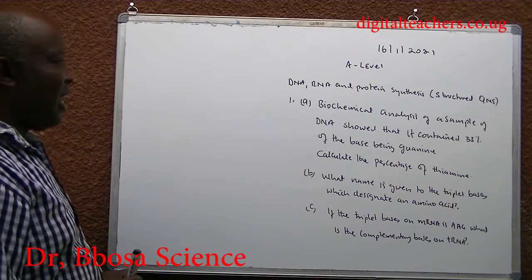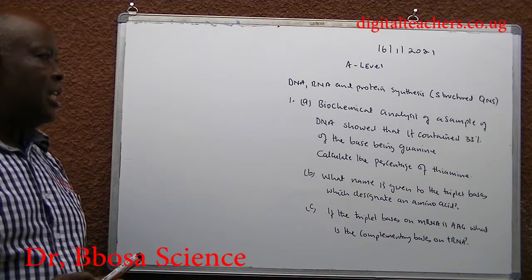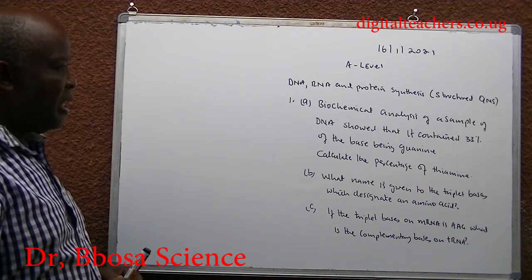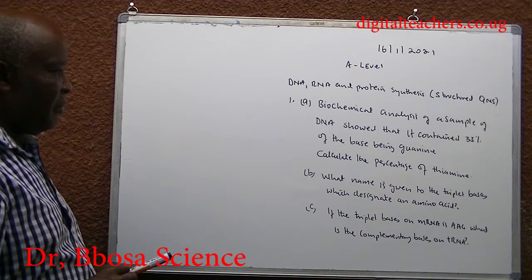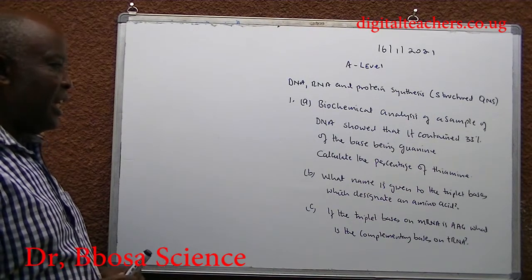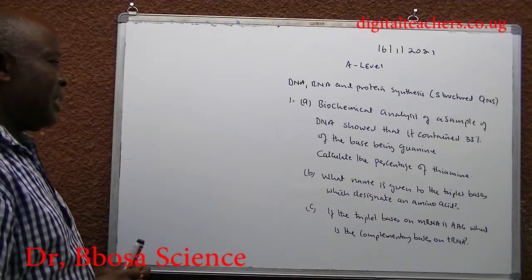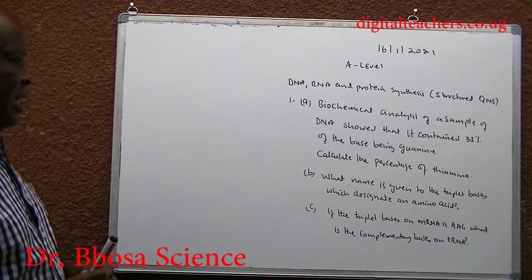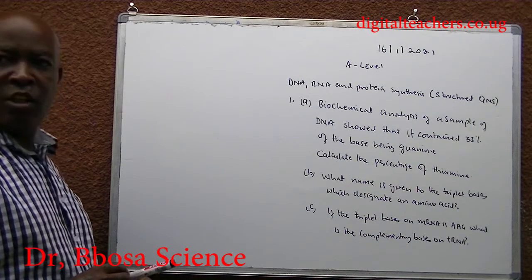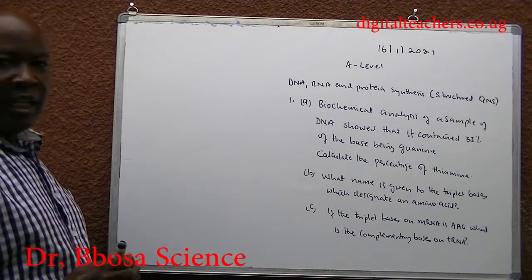Biochemical analysis of a sample of DNA showed that it contained 33% of the bases being guanine. Calculate the percentage of thymine. B. What name is given to the triplet bases which designate an amino acid? C. If the triplet bases on messenger RNA is AAG, what is the complementary bases on tRNA? You can pause and answer.